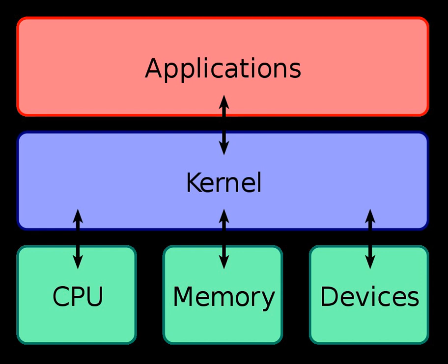Advocates of monolithic kernels point out that the two-tiered structure of microkernel systems — in which most of the operating system does not interact directly with the hardware — creates a not insignificant cost in terms of system efficiency. These types of kernels normally provide only minimal services such as defining memory address spaces, inter-process communication, and process management. Proponents of microkernels point out that monolithic kernels have the disadvantage that an error in the kernel can cause the entire system to crash. However, with a microkernel, if a kernel process crashes, it is still possible to prevent a system-wide crash by merely restarting the service that caused the error.